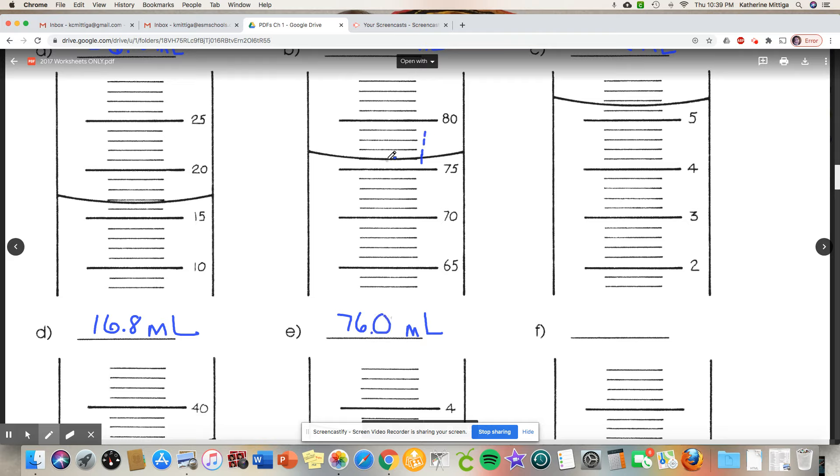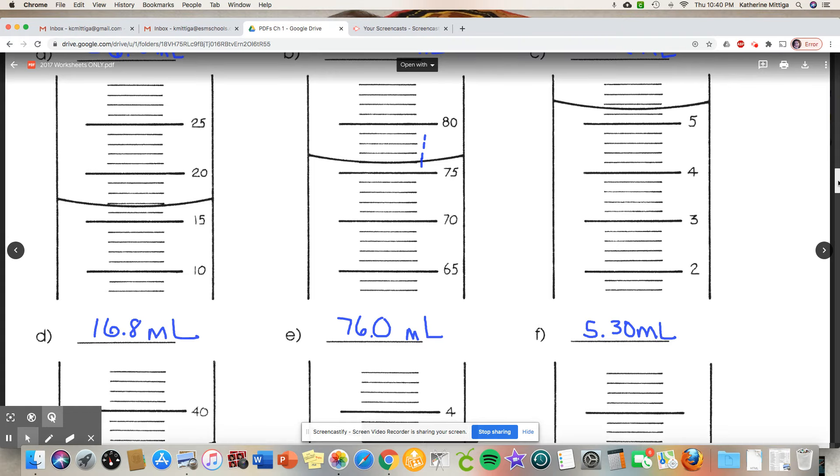Notice with this one, this looks like it's to the point twos. So if we know that first decimal place, which is the tenths place, we can go to the hundredths. So here's five, five point two, five point four. So in between five point two and five point four we're gonna go five point three.